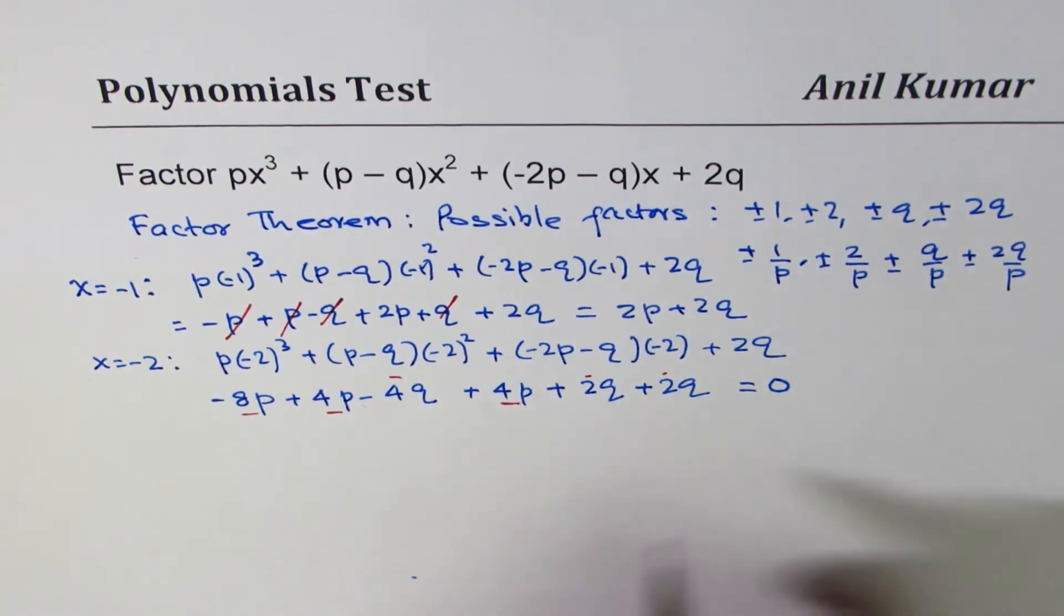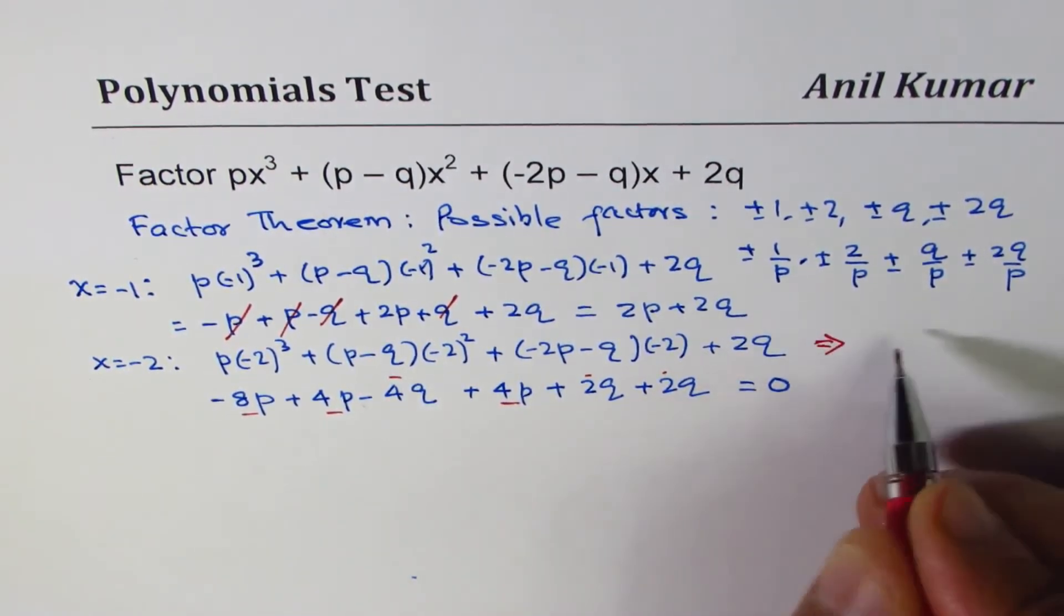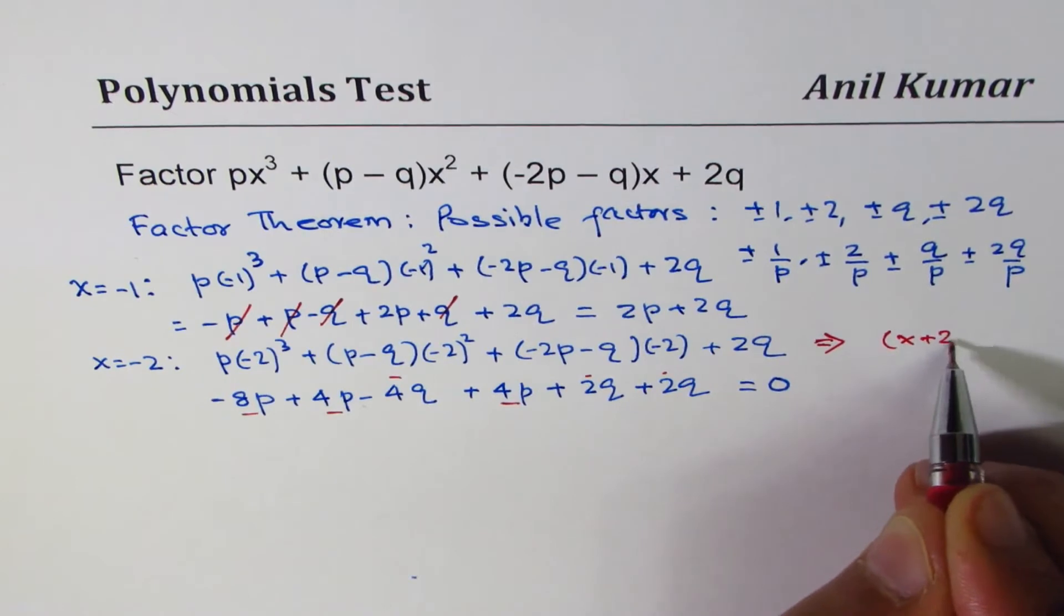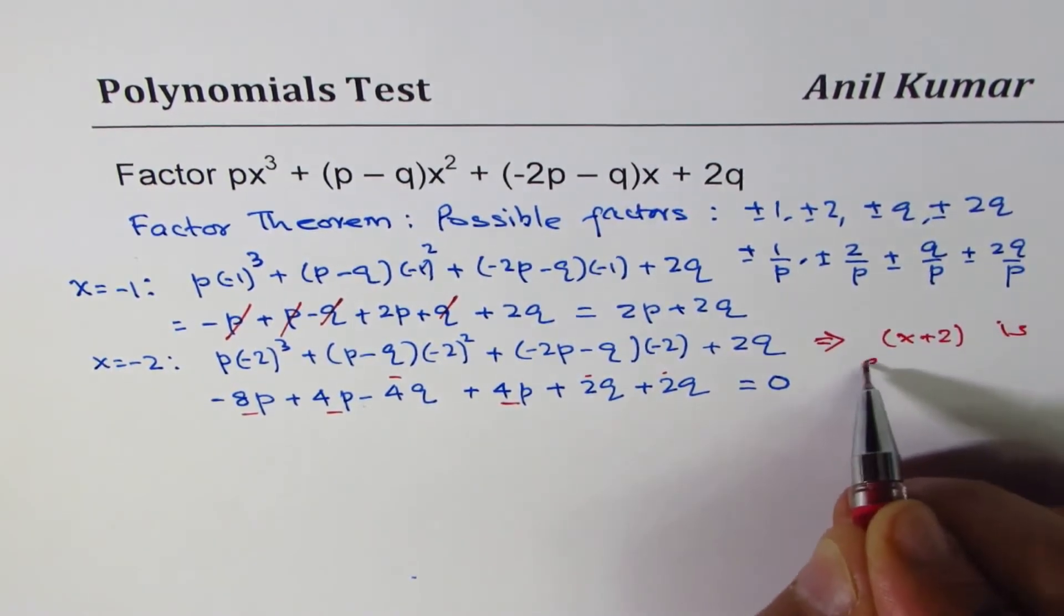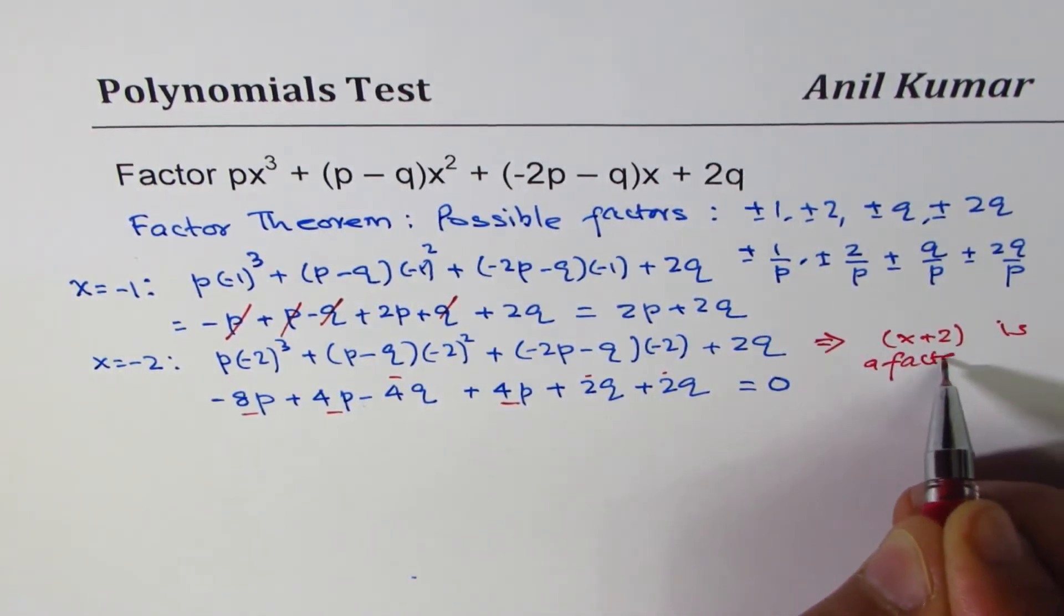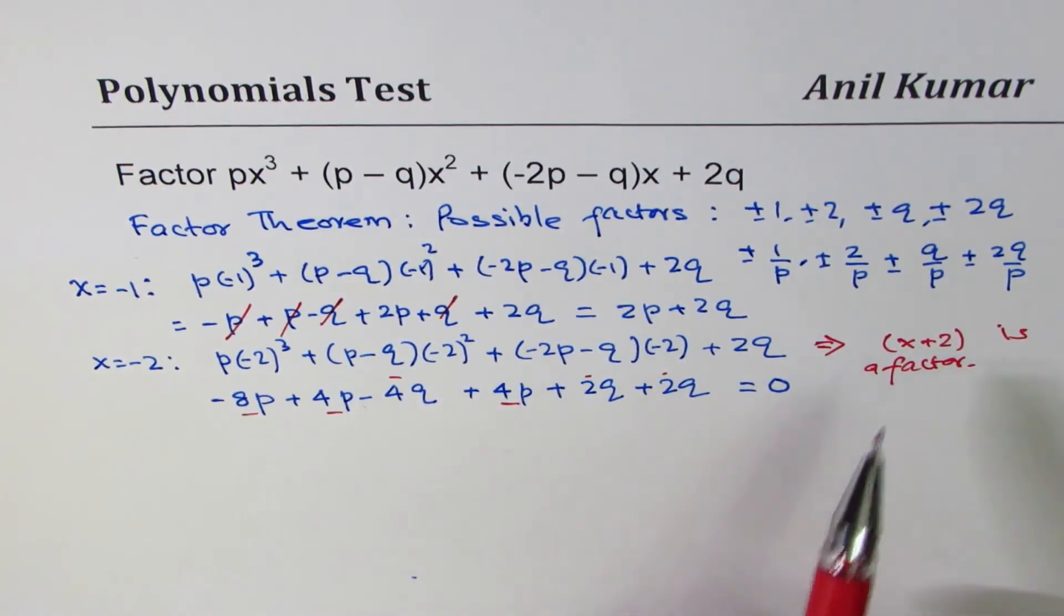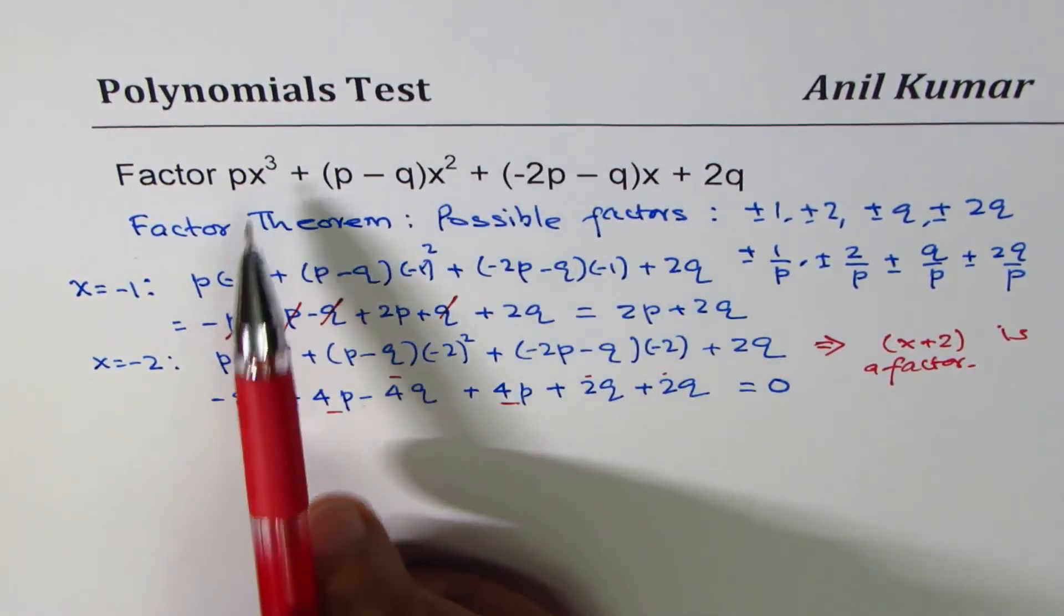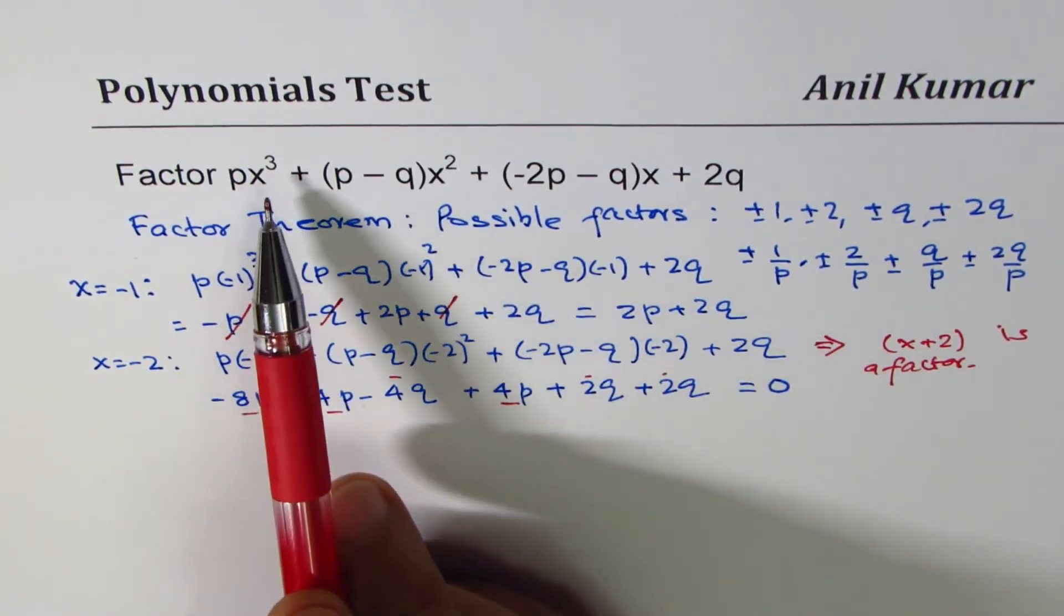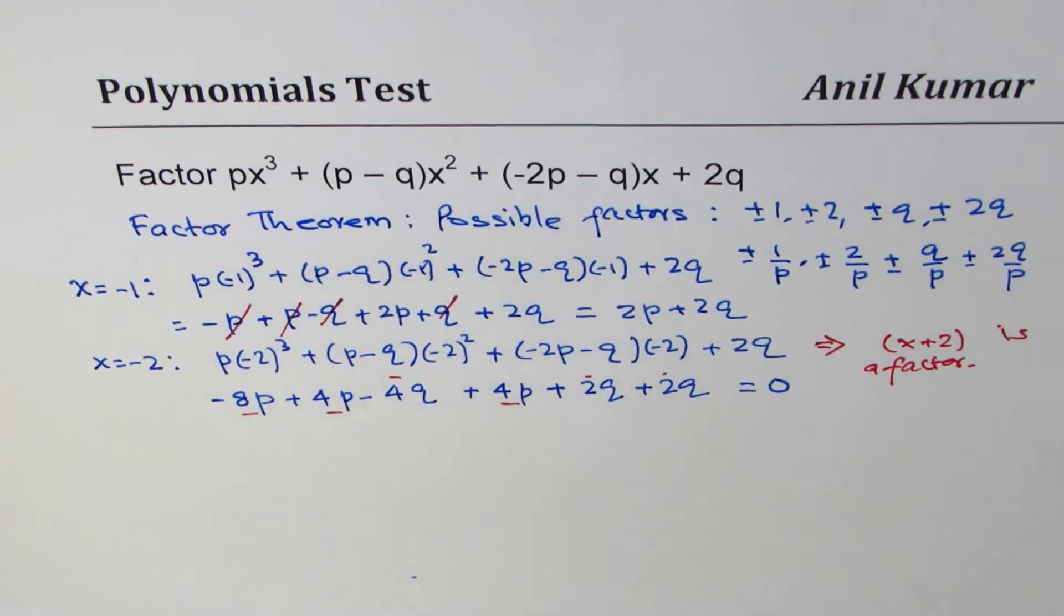Now from here, it is very clear that x + 2 is a factor. Now, since we know x + 2 is a factor, we could divide this equation by x + 2. We'll get a quadratic equation, and then we can factor. So at least we've got one factor.